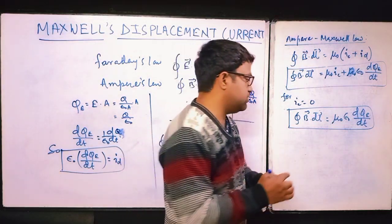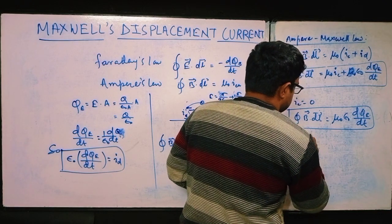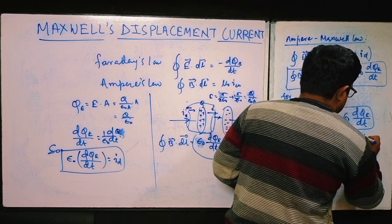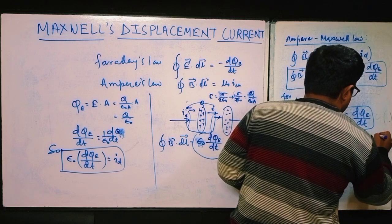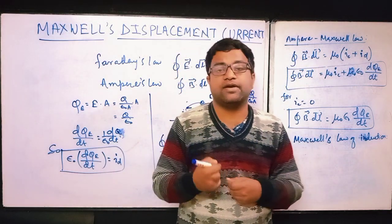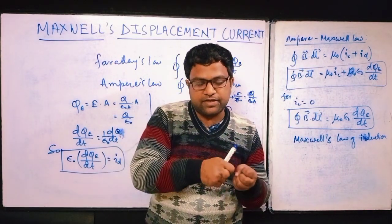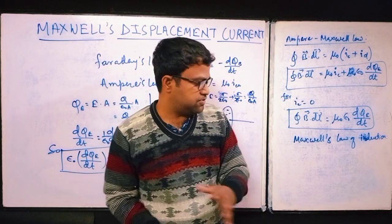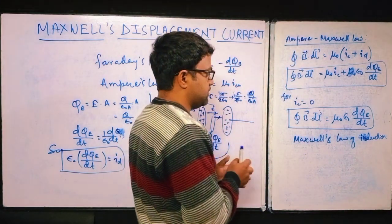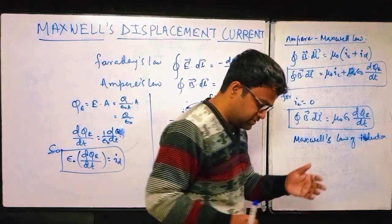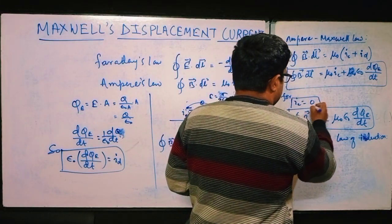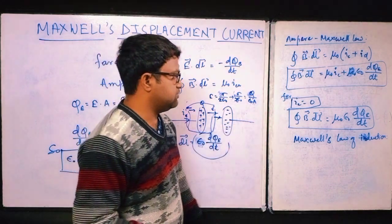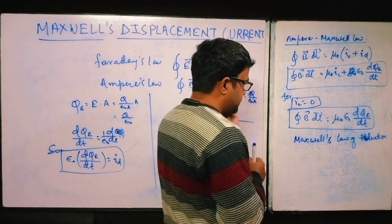For I_C = 0, you can write: B·dl = μ₀ε₀·(dΦ_E/dt). This is called Maxwell's law of induction — the reverse of Faraday's law. Faraday's law tells us a varying magnetic field creates an induced EMF; here a varying electric field induces a magnetic field. This unified law fundamentally changed the communication system and brought about modern science and technology.